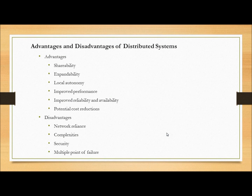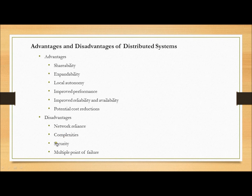Some advantages and disadvantages of distributed systems. Advantages: shareability — everyone in the network can share data and access the network; expandability — the system can be expanded; local autonomy; improved performance, improved reliability and availability; and potentially low cost. Disadvantages: network reliance — as it is connected to a network, reliability is somewhat low; complexity in distributed systems is high; security is reduced as the network expands; and there is multipoint failure.